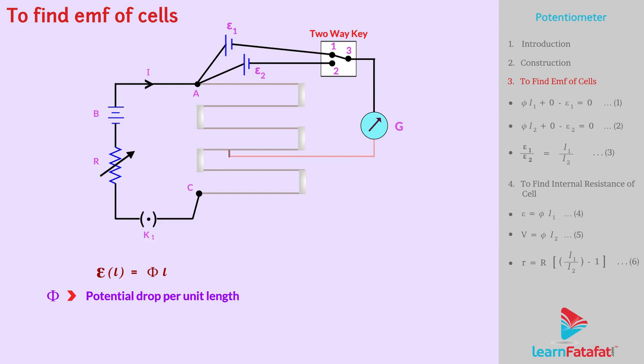Now, move jockey up to distance l₁ from point A, say up to point N₁. At this point, current reduces to zero and so galvanometer settles on zero mark, that is, shows no deflection.